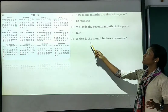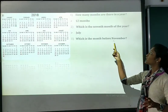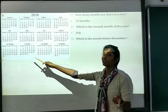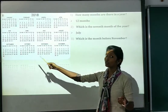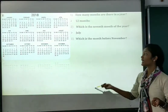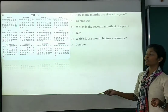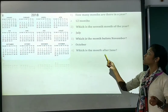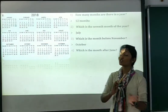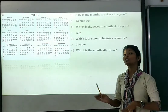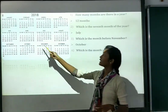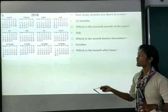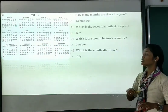Number 3: which is the month before November? The month before November is October. So you will write the answer: October. Number 4: which is the month after June? The month after June is July. So you will write the answer: July.